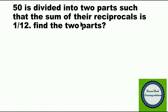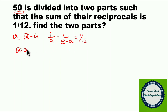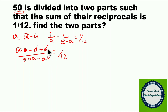50 is divided into two parts. If you take the first number as A, the second number is 50 minus A — for example, if the first part is 10, the second part is 40. The sum of the reciprocals is 1 by 12, so 1 by A plus 1 by (50 minus A) equals 1 by 12. Solving: (50 minus A plus A) divided by (50A minus A squared) equals 1 by 12, and the A terms cancel to give 600 equals 50A minus A squared.